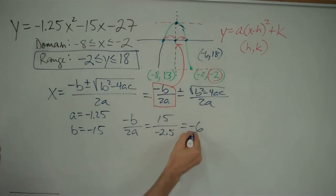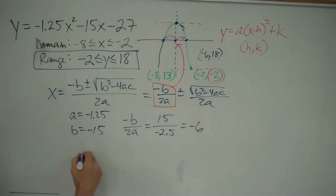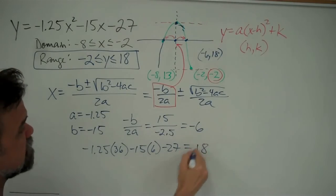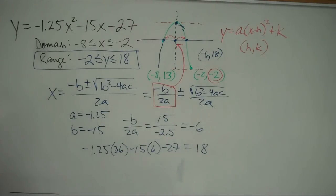Now, how do you get the 18? Well, just take this negative 6 and plug it into our function. Negative 1.25 times 36 minus 15 times 6 minus 27. Pop that in your calculator and what you'll find is you get 18. So our vertex is negative 6 and 18.